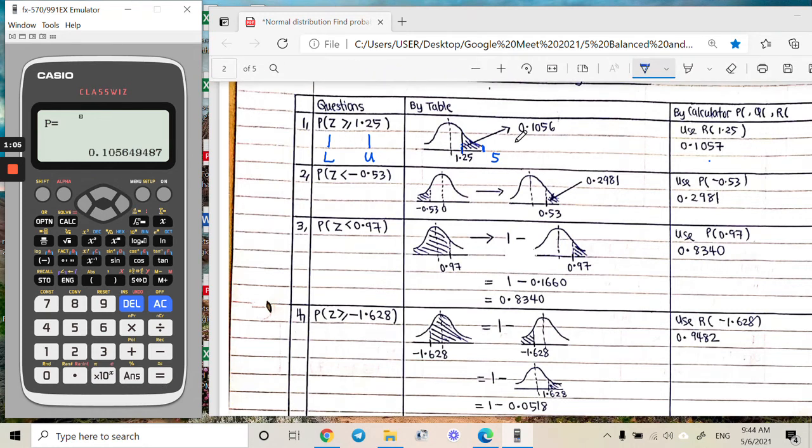Example question 2: P(Z < -0.53). After you draw out the shape it looks like this. Lower will be this part, so you can put negative 5 if it's small enough, and then upper you put negative 0.53.